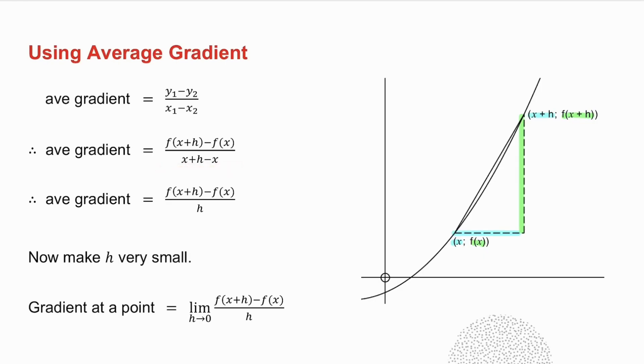The x's cancel at the bottom and I get that. Now the average gradient between these two points is not the gradient at this point. So what I do is I take this point and move it closer and closer and closer to the other point. Because then if I take the gradient between this point and a point very close to it, the average gradient between those two points is getting closer and closer to the gradient of the tangent.